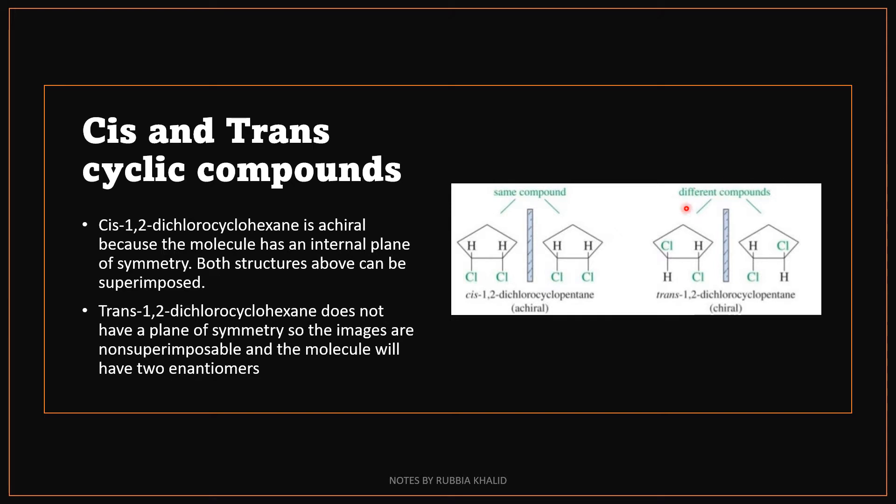And the trans-1,2-dichlorocyclohexane does not have a plane of symmetry, so the images are non-superimposable and the molecule is chiral. And these molecules are two enantiomers of each other.